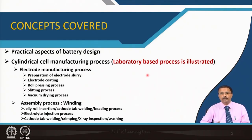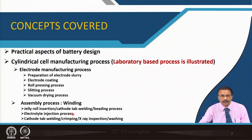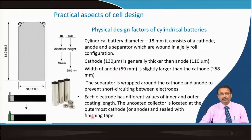The manufacturing process includes electrode manufacturing, which starts with preparation of the electrode slurry, then coating, then calendaring or roll pressing, then cutting to size, then vacuum drying, and finally assembly — including winding to form a jelly roll, cathode and anode tap welding, the beading process, electrolyte injection, cathode tap welding, crimping, inspection, and washing.